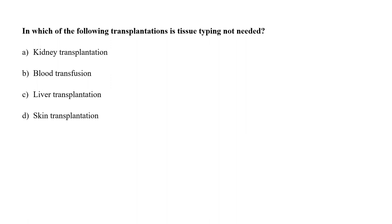In which of the following transplantations is tissue typing not needed? A. Kidney transplantation, B. Blood transfusion, C. Liver transplantation, or D. Skin transplantation? Tissue typing tests donor and recipient tissues for compatibility to avoid graft rejection. Skin grafting involves removal of skin from one area and transplanting it to another area of the same individual's body. Since it is from the same individual, tissue typing is not required. So the correct answer is option D, skin transplantation.